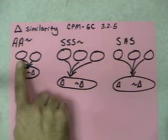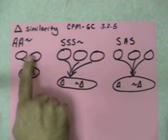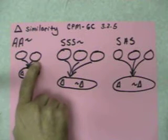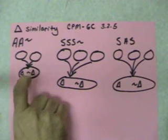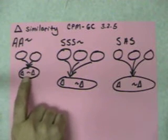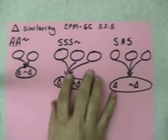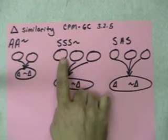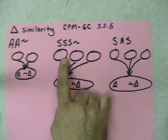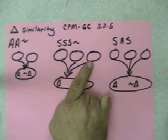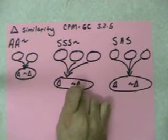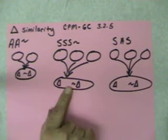In angle-angle you have to show that one pair and another pair of corresponding angles are congruent or the same, and then you can write your similarity statement. In side-side-side we're going to have to find that three pairs of corresponding sides in the triangle have the same zoom factor. Then we can show that they're similar.